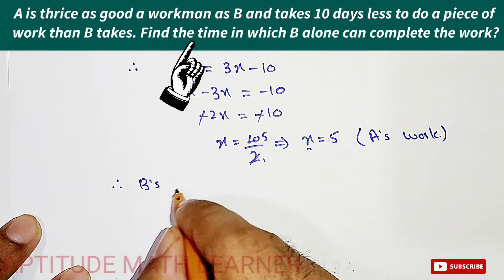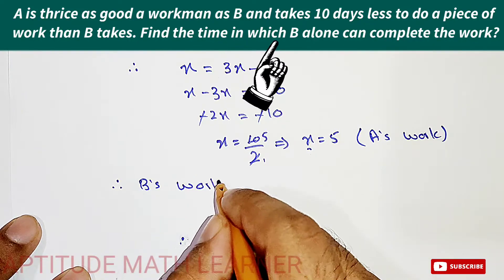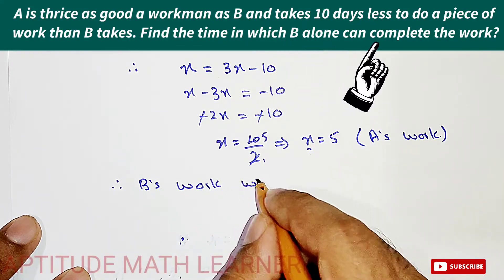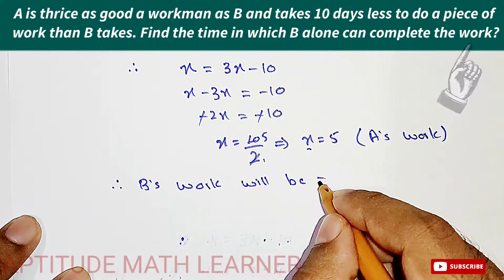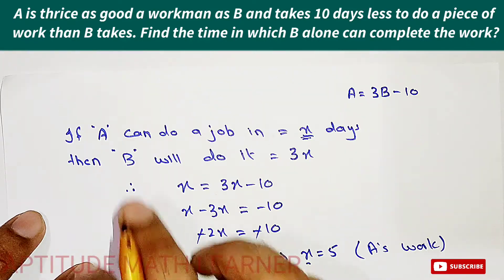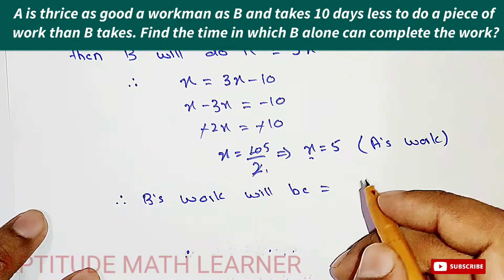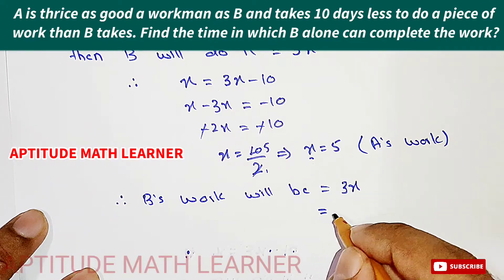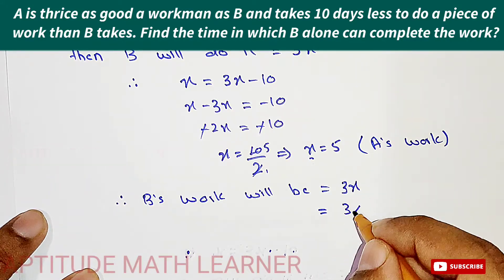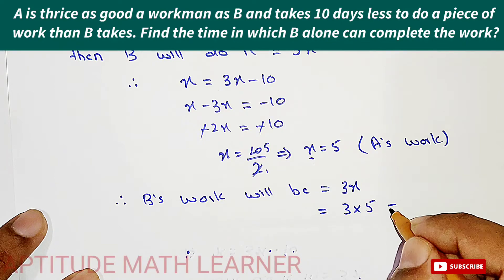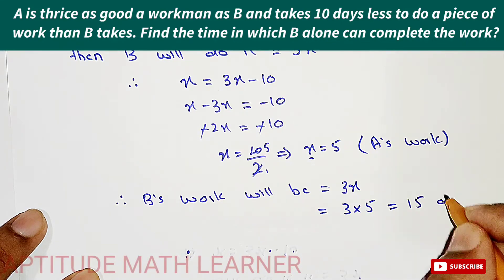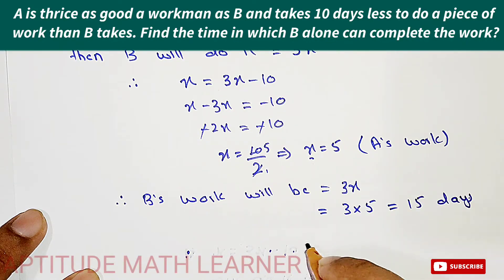B's work - how much will be B's work? So B's work will be, we have taken the work for B that is 3x. So this becomes 3x, and putting the value of x, three multiplied by five is equal to 15 days.